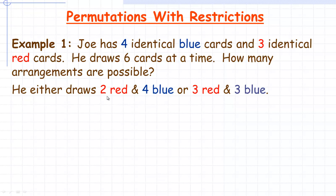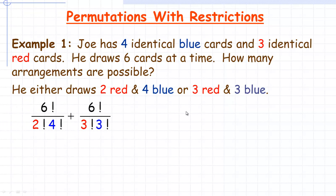For example, he cannot draw one red and five blue because he only has four blue available. So in order to figure this out, we need to count how many ways you can arrange two identical red things and four identical blue things, and then the same with three red and three blue. There are six objects here, and when some of them are the same, you reduce the number of possible permutations.